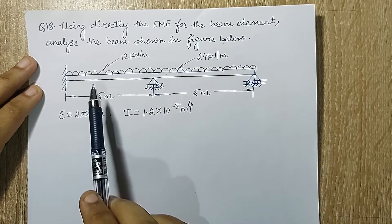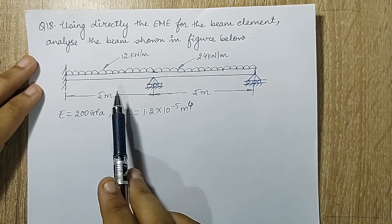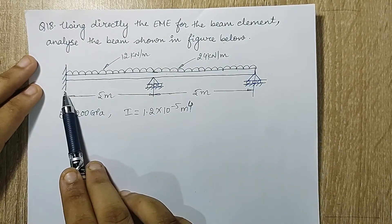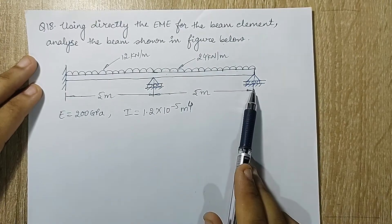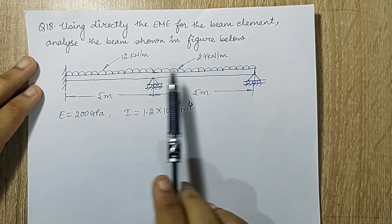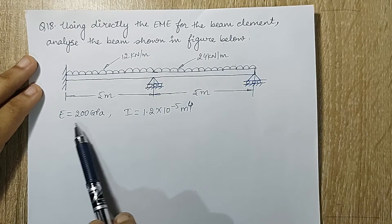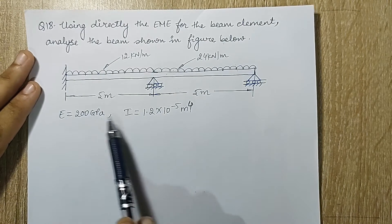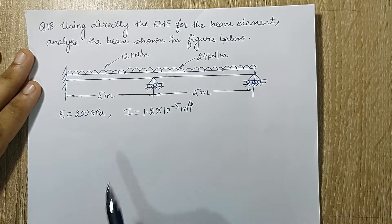Let's read the question. Using directly the EME for the beam element, analyze the beam shown in figure below. This beam is fixed at one end. At this point I can see a roller and here as well there is a roller. The length of the beam is given to me. There are two different types of UDL loading given here. The value of E is given as 200 GPa and I is given as 1.2×10⁻⁵ m⁴.